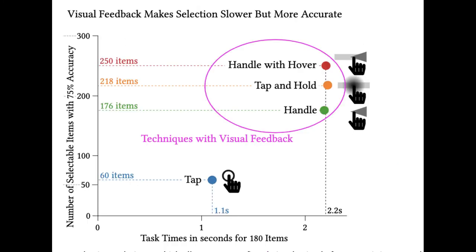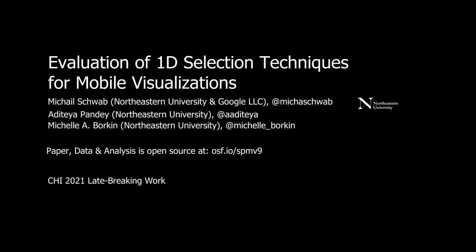In summary, providing any type of visual feedback using drag-based selection techniques improves selection accuracy 3 to 4-fold and allows users to reliably interact with more data on a 1D visualization. This comes at the cost of a small increase in task times. The paper is available online as open source at osf.io/spmv9.